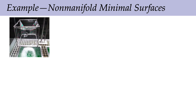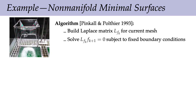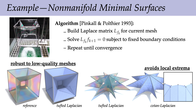Here's an interesting example where the solution really should be non-manifold: computing soap films for minimal surfaces. The idea is you take a wire frame, dip it in soapy water, and sometimes you get a minimal area surface — a zero mean curvature surface — that is non-manifold. We apply an algorithm from Pinkall and Polthier: build the Laplacian for the current mesh, solve for a discrete harmonic function LF=0 subject to fixed boundary conditions, and repeat until convergence. With our tufted Laplacian we get a nice answer even from very degenerate meshes. Also, switching to the tufted Laplacian avoids non-physical local extrema that appear with Cotan Laplacian.